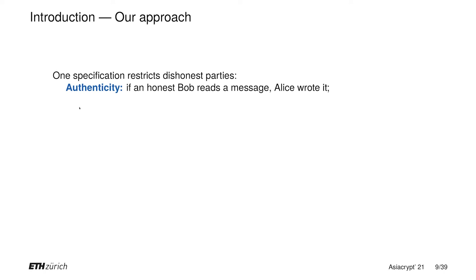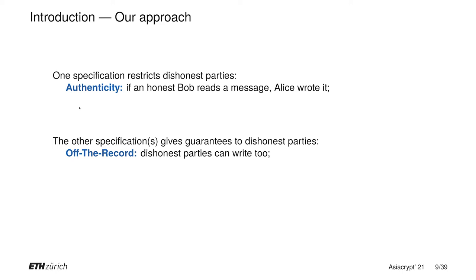Using this notion of specifications, we can then capture the ideal world we wanted. We define one specification capturing authenticity — restricting the capabilities of dishonest parties — and another specification capturing the off-the-record guarantee, namely that dishonest parties can write too. The ideal specification then corresponds to an intersection of these two specifications, giving both guarantees: authenticity and off-the-record.